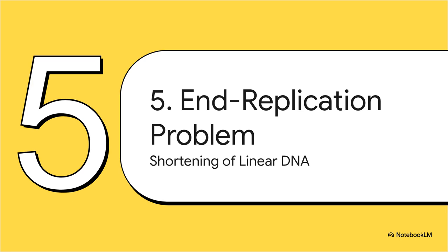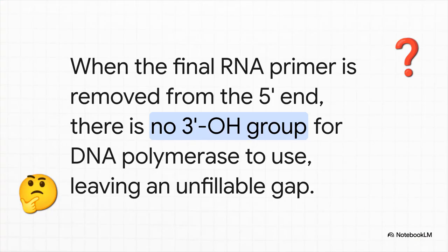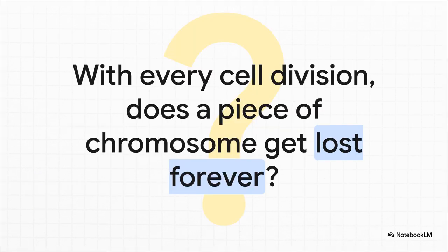Now we arrive at the central conflict — the major headache of replicating a linear chromosome. That very last primer on the lagging strand, the one sitting at the absolute tip of the chromosome, creates a huge problem. When that final primer gets removed, it leaves a gap. But unlike all the other gaps, there's no DNA upstream of it. DNA polymerase needs a 3' hydroxyl group — a little chemical hook — to start building from. And right here, at the very end, there just isn't one. The machinery has nothing to grab onto to fill in that last little piece. And this leads to a terrifying thought: if you can't fill that gap, then with every single round of cell division, your chromosomes would get shorter and shorter. You'd start losing essential genetic information.